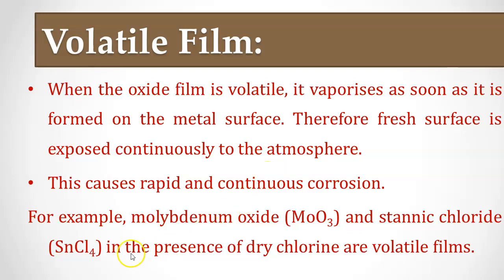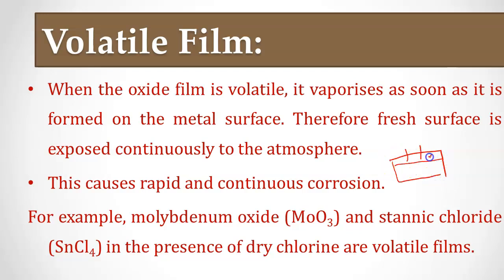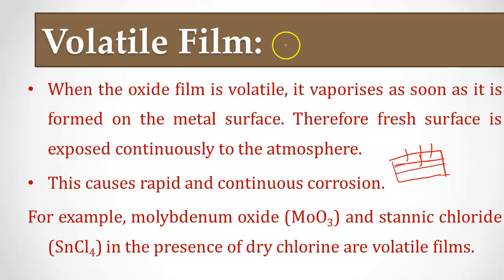The last type is the volatile oxide film. Volatile means it evaporates easily. When the volatile oxide film forms on the metal surface, it vaporizes as soon as it forms, leaving the underlying surface exposed. This causes rapid and continuous corrosion, making it the most non-protective film. Volatile film is observed on molybdenum oxide and on stannic chloride in the presence of dry chlorine.